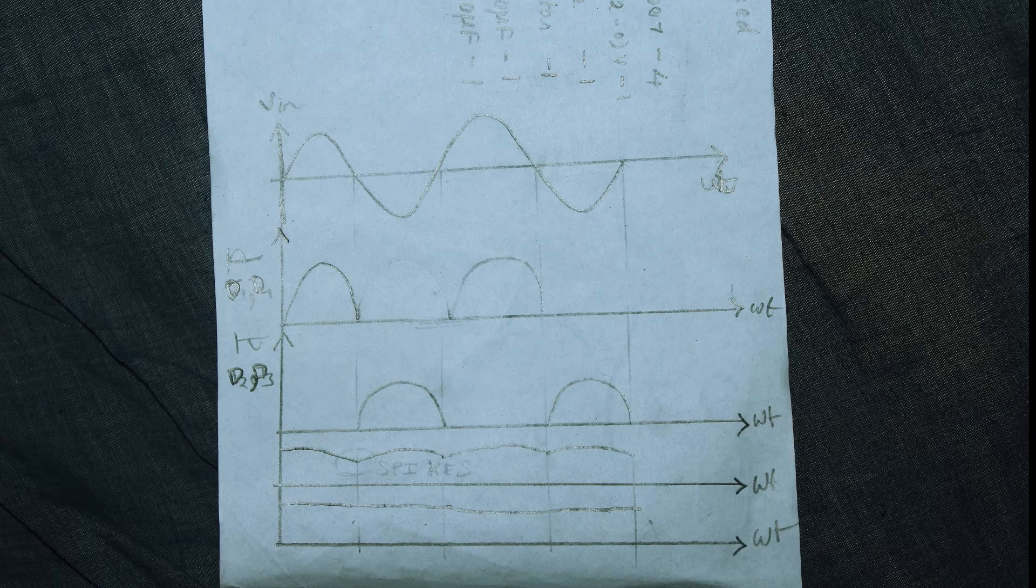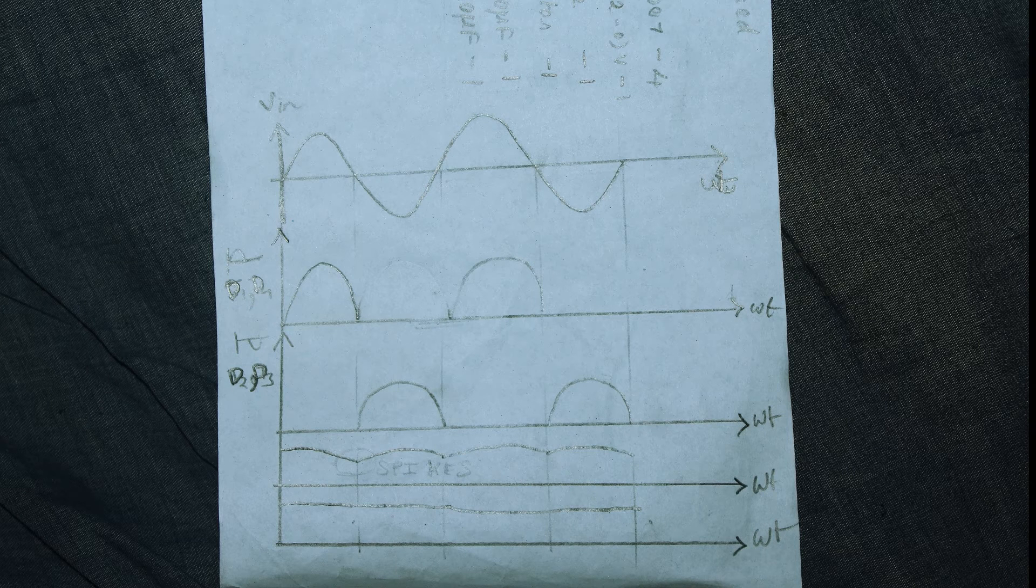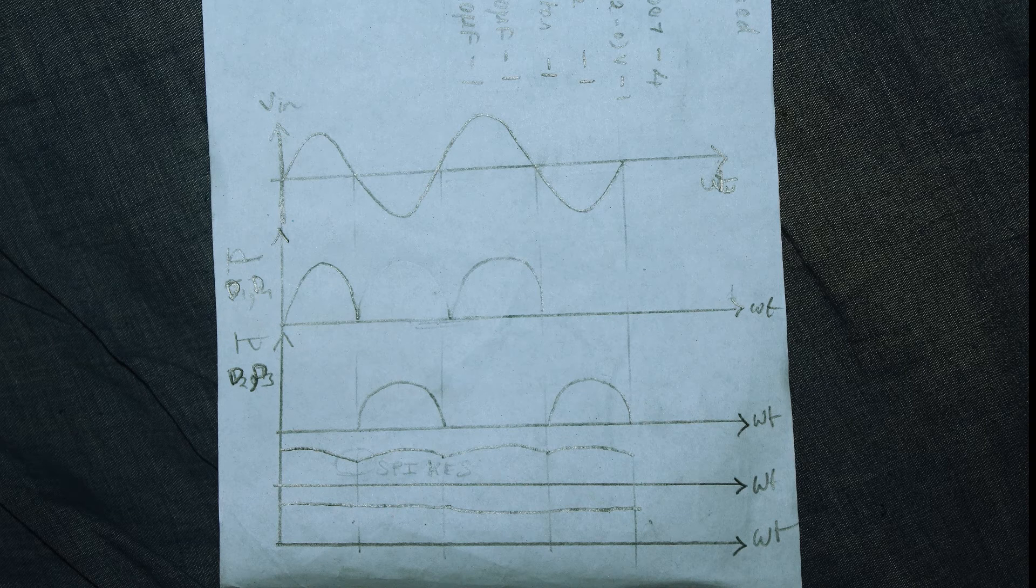Okay guys, now we will see the waveforms of the rectifier circuit. This is the input waveform. The figure shown at the top is the input waveform, and you can see both the cycles are taking place in the input waveform: one is the positive half cycle and the other one is the negative half cycle.